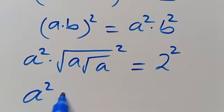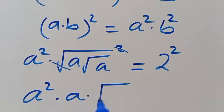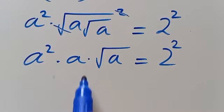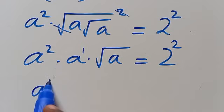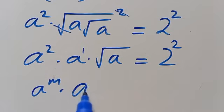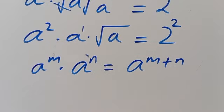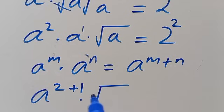We have A squared — we cancel this — multiplied by A, multiplied by root A, equals 2 to the power of 2. This one has power of 1, because A to the power of M multiplied by A to the power of N equals A to the power of M plus N. So this will be A to the power of 2 plus 1, multiplied by root A, equals 2 to the power of 2.